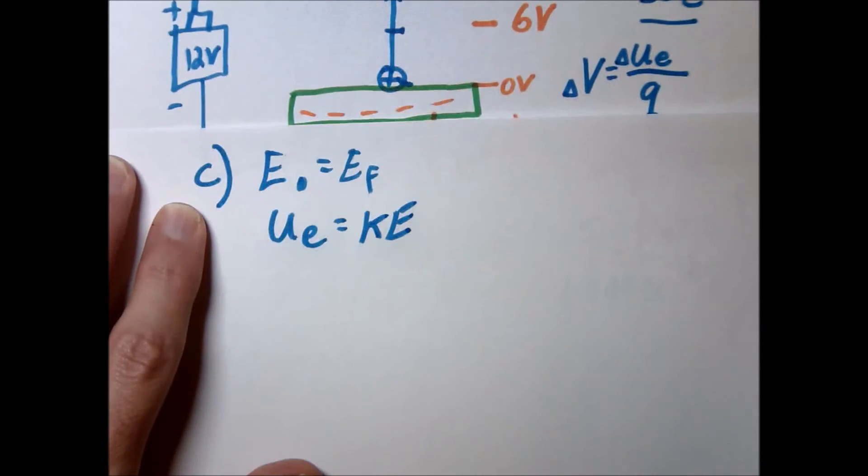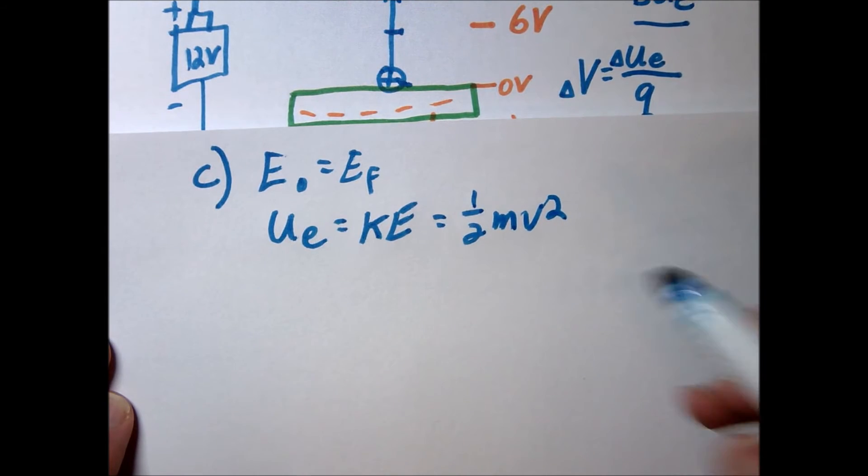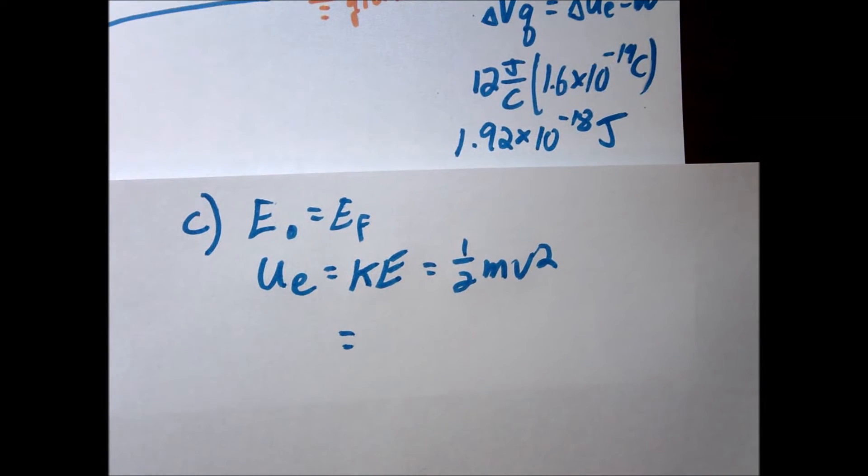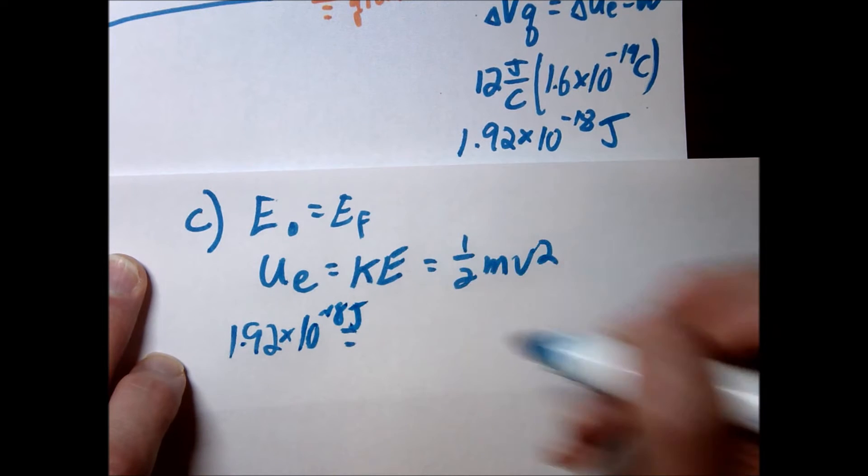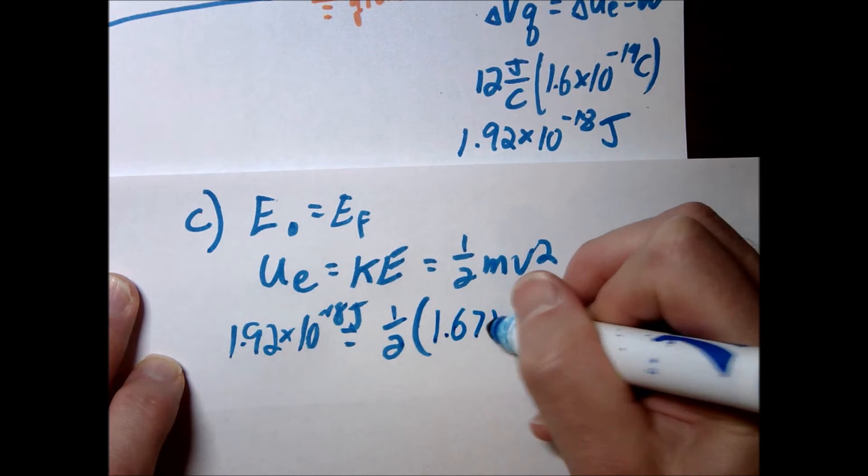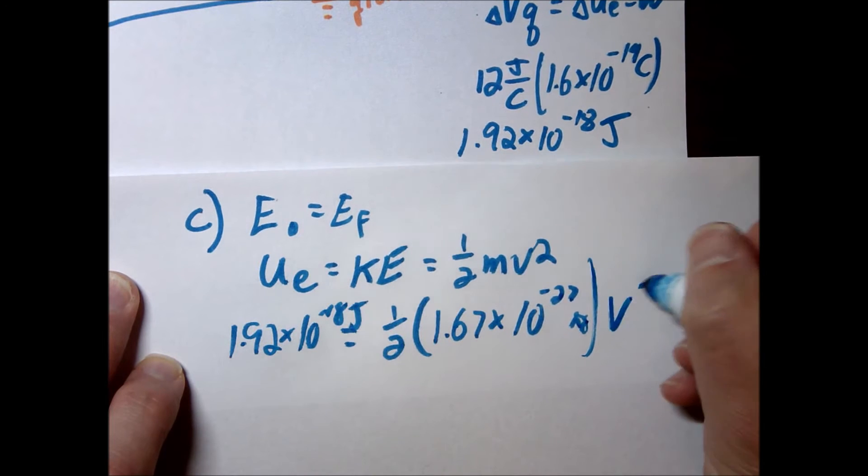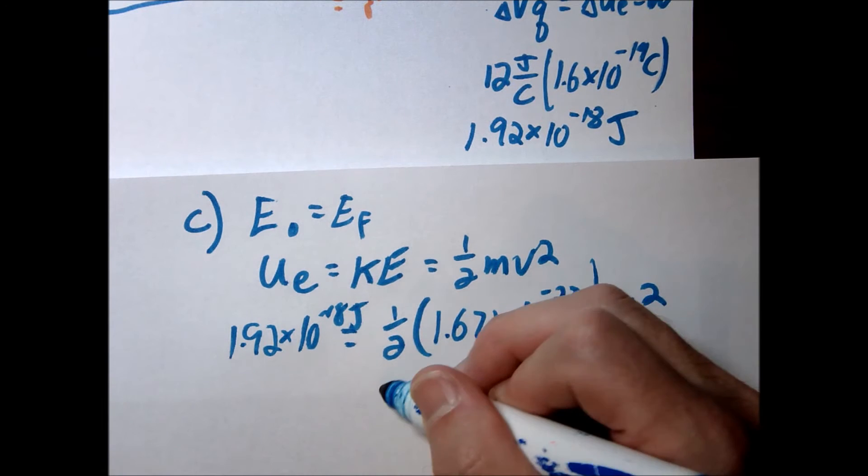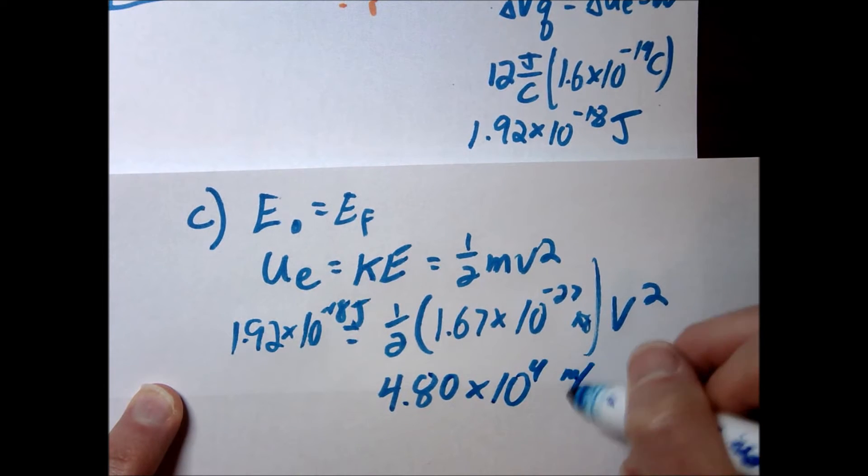So we're just going to use Ue equals Ke, and we know kinetic energy is 1 half mv squared. In this case, we got 1.92 times 10 to the negative 18 joules, that was our starting energy. And then we're going to take the mass of the proton, that's 1.67 times 10 to the negative 27 kilograms, times v squared. So go ahead and do your algebra. When you do it, make sure you get what I get.